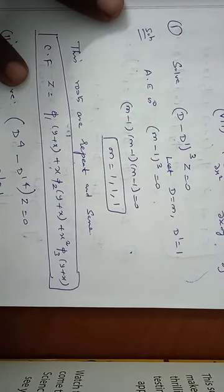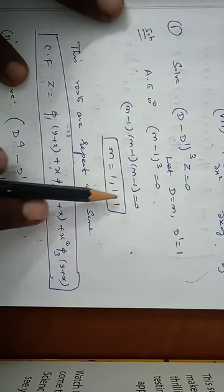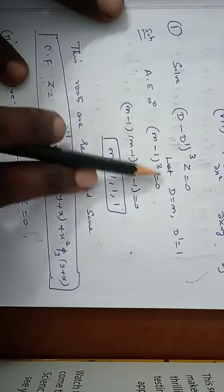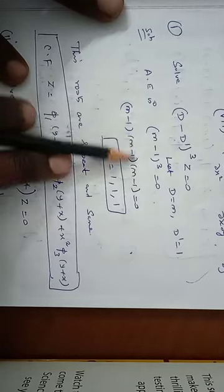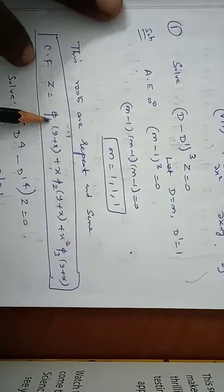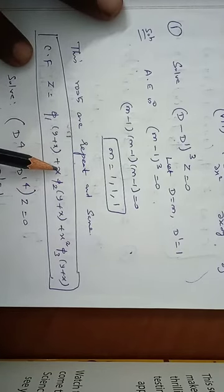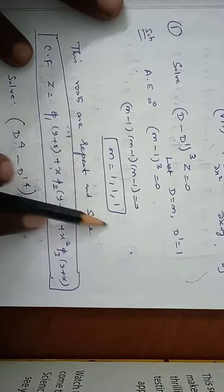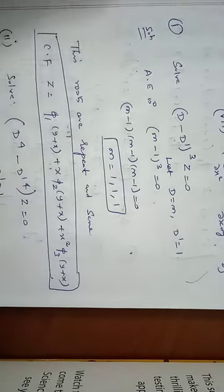Problem 1: Solve (D - D')³z = 0. Let D = m and D' = 1. The auxiliary equation is (m - 1)³ = 0, so m = 1, 1, 1. All roots are repeated and the same. The complementary function is z = φ₁(y + x) + x·φ₂(y + x) + x²·φ₃(y + x). Since m is repeated three times, this is the final answer.